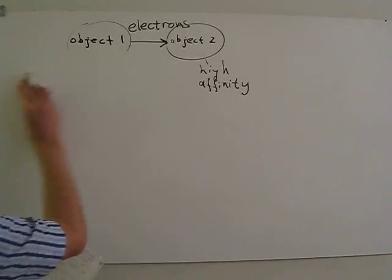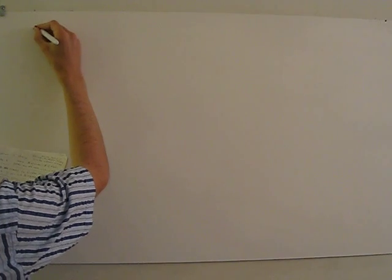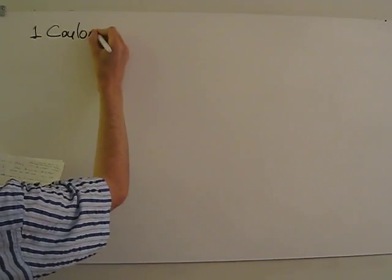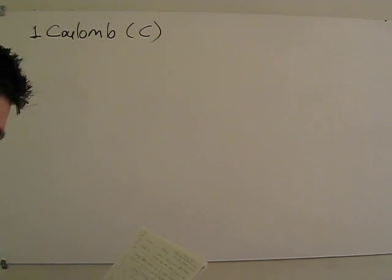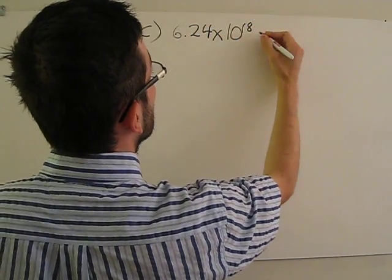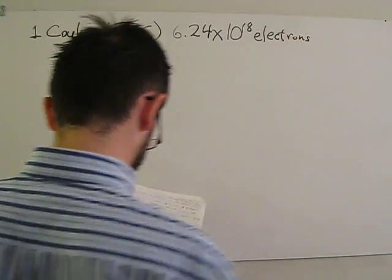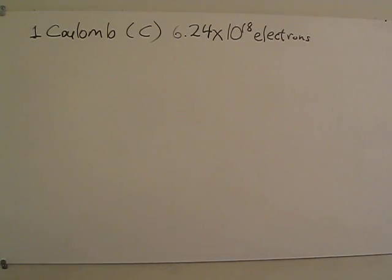Let us now discuss how to measure electric charge. The unit of electric charge is the Coulomb. One Coulomb is the charge created by the excess or deficit of 6.24 times 10 to the 18 electrons. The excess of electrons leads to an object being negatively charged, and the deficit of electrons leads to an object being positively charged.